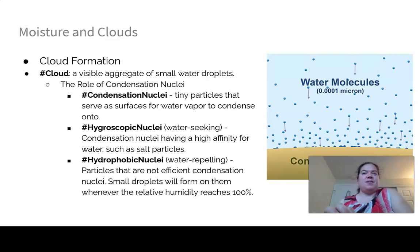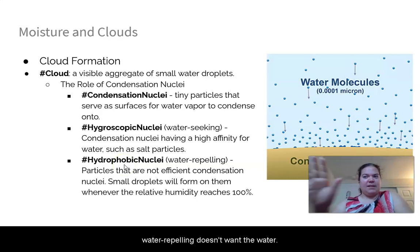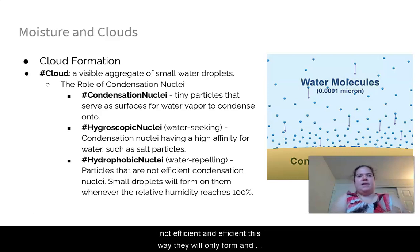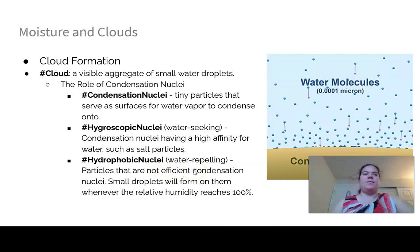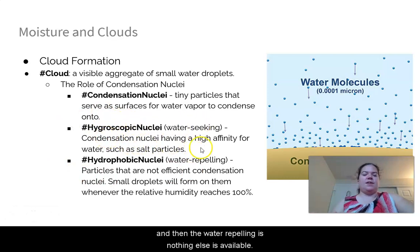Hygroscopic nuclei have a high affinity for water. Hydrophobic nuclei — like oil or gasoline — are not efficient condensation nuclei; condensation only forms on them when relative humidity reaches 100% or above. The water vapor will seek out the hygroscopic nuclei first, then the hydrophobic ones if nothing else is available.